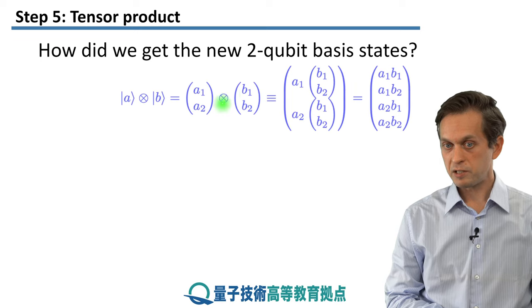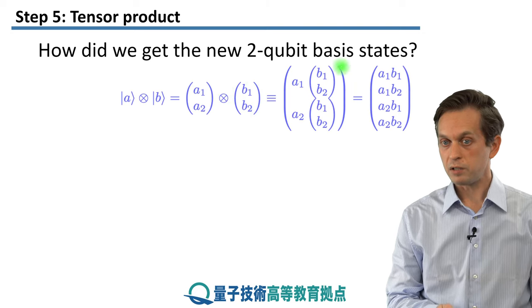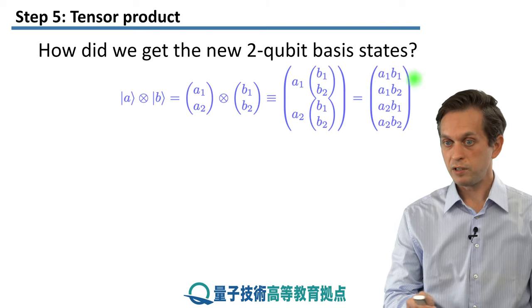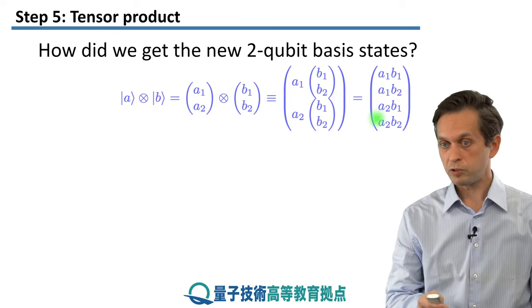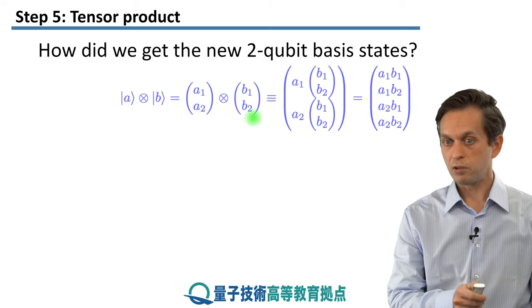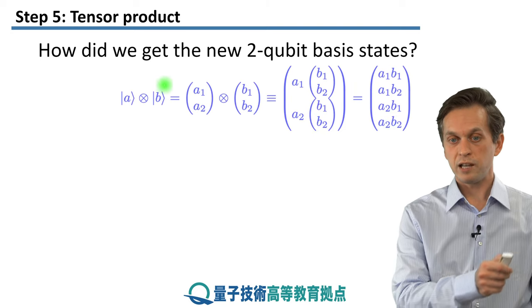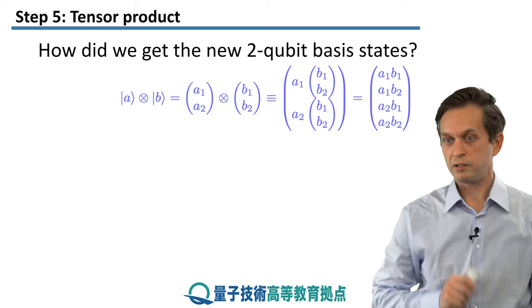The tensor product operation is defined as follows. You take the first probability amplitude A1 and multiply the whole column vector of the second qubit by it. That gives the first two elements of the new four-dimensional vector: A1 times B1 at the top, and A1 times B2 below that. For the bottom two elements, you take A2 and again multiply the whole column vector of qubit 2: A2 times B1, and A2 times B2. So in ket notation, ket A tensor product ket B can be represented in vector form like that.